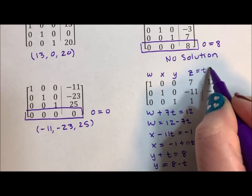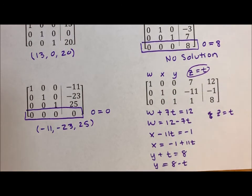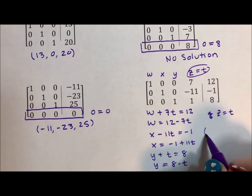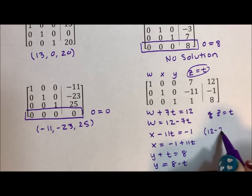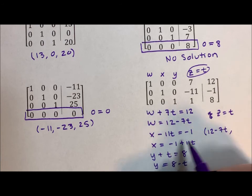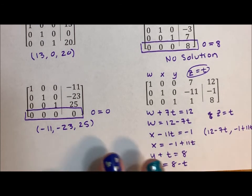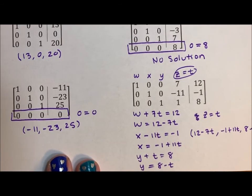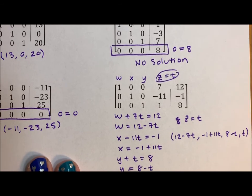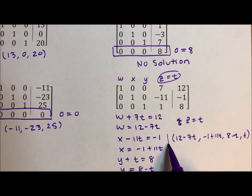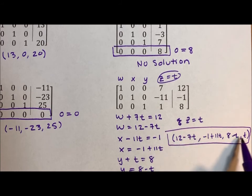We're setting Z up to be our parameter. We still set our answer up in parenthetical form. W is 12 minus 7t, X is negative 1 plus 11t, Y is 8 minus t, and Z is just t. There we have our full answer - four parts with the parameter included in all four parts, because we cannot solve it distinctly with only three equations and four unknowns.